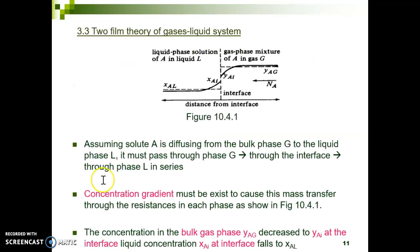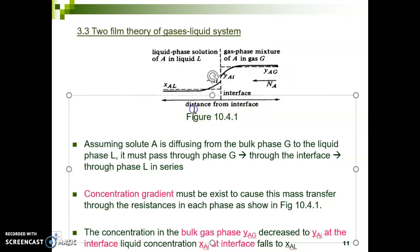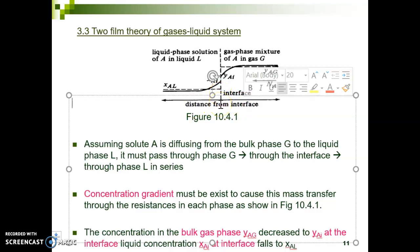We will continue with section 3.3: the two-film theory of gas-liquid systems. You need to remember that our system now has two phases — a gas phase and a liquid phase. From this diagram, you can see the two-film theory explained. We start from the distance at the interface, which is the phase between your liquid phase and your gas phase.